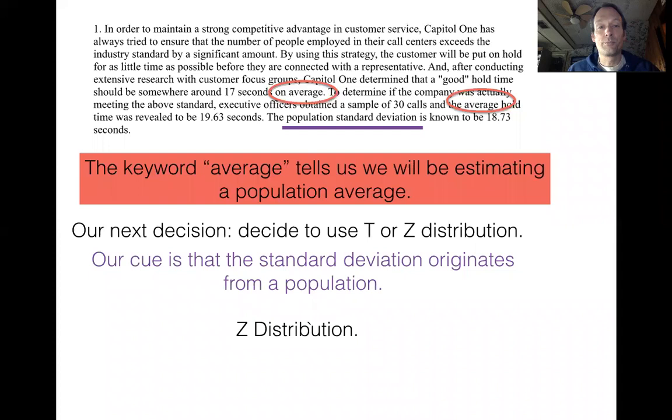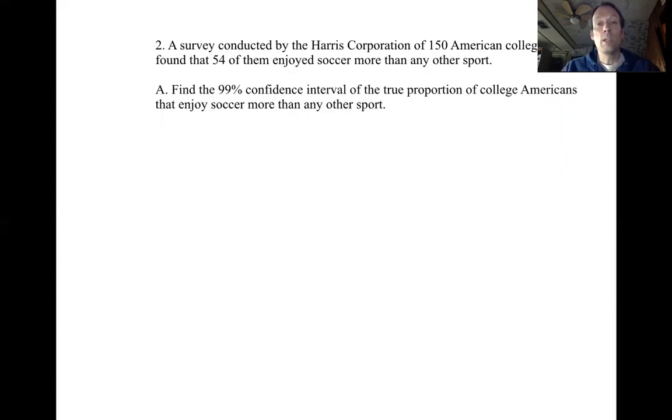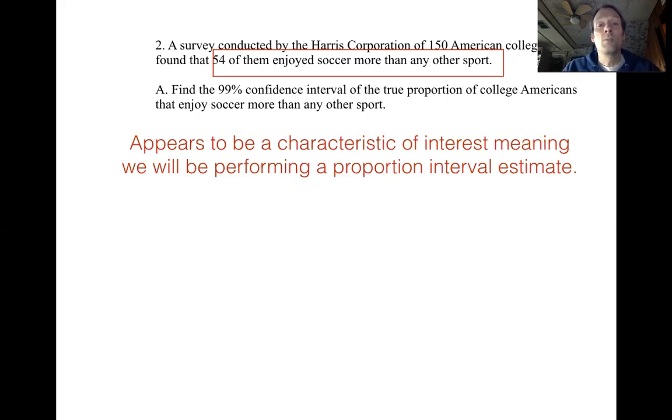Let's take a look at the next question. So take a few minutes, read through the question, pause the video if you need to. In part A, obviously they used the words interval of the true proportion. If they didn't do that though, how would you be able to figure out what to do? Notice that they said 54 people enjoyed soccer more than any other sport. And that sounds kind of like a question you could ask people in the form of a yes or no question. That you could approach people and say, do you enjoy soccer more than any other sport? And they could answer yes or no. So when something like that happens, it's a characteristic of interest. So if you responded, I enjoy soccer more than any other sport, you have that characteristic of interest that a researcher wants to track.